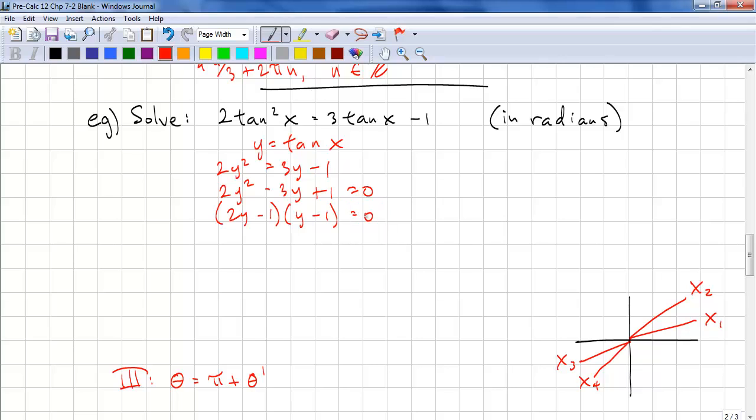Now we can substitute back in. We have 2 tan x equals 1. And we also have tan x equals 1. We'll call this one x1. We'll call this one x2. Now we solve for this. Tan x1 equals 1 half. x1 equals inverse tan of a half. Here we have x2 equals inverse tan of 1, which is just pi over 4.